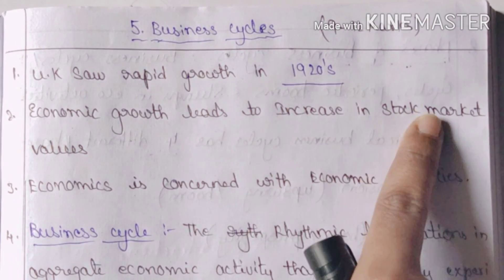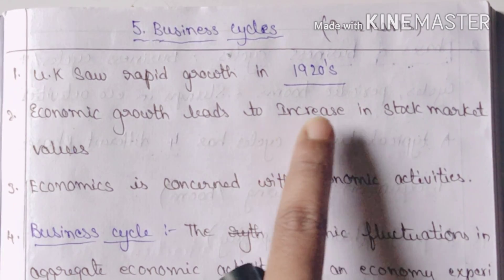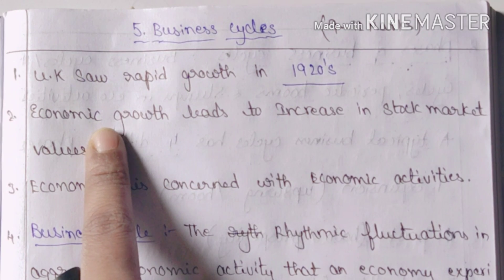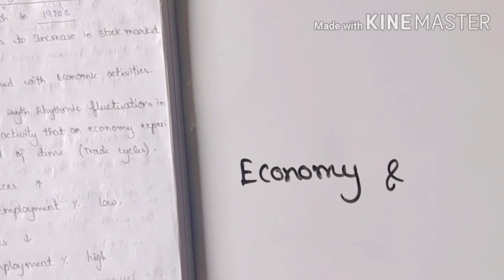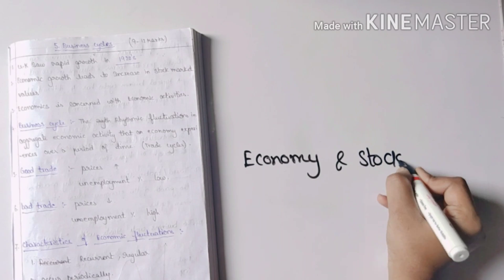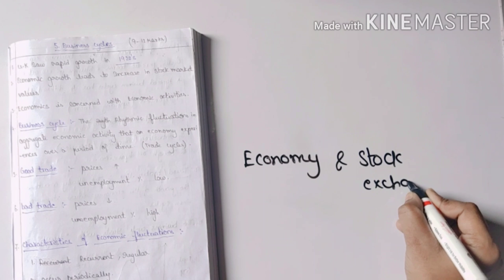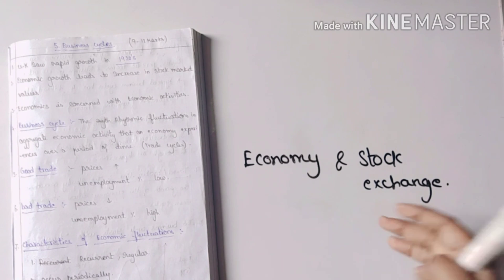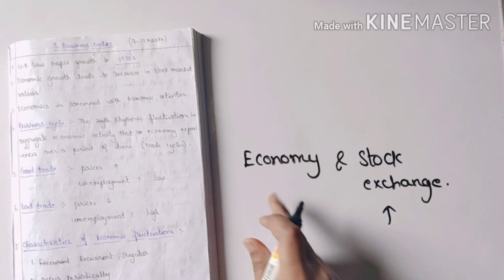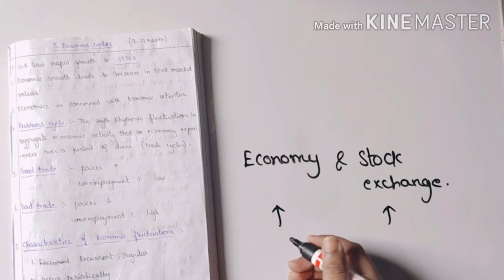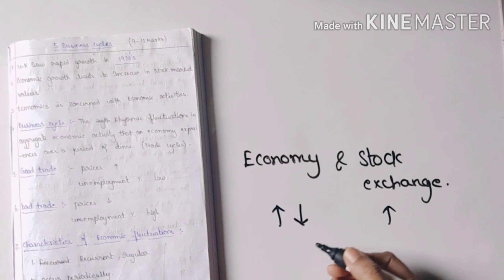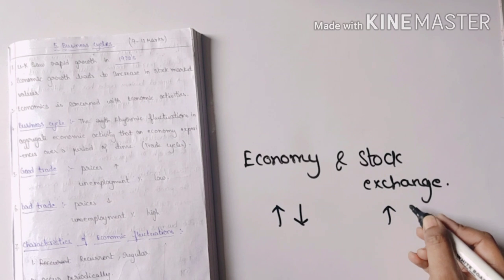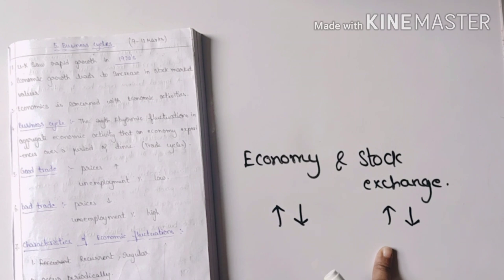If you reverse this, when stock market values decrease, the economy growth will also decrease. The economy and stock exchange have a direct relation — the stock exchange increases with economy growth, and decreases when the economy slows.